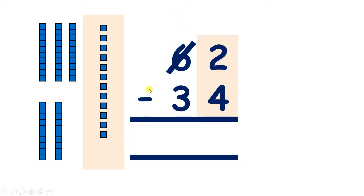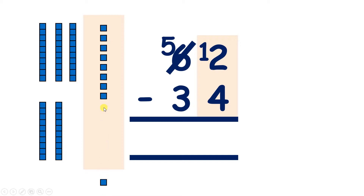So now we don't have 6 tens — we have 5 tens — and now we have 12 units. Because we have 12 units, we can subtract 1, 2, 3, 4, and that leaves us with 8 units.